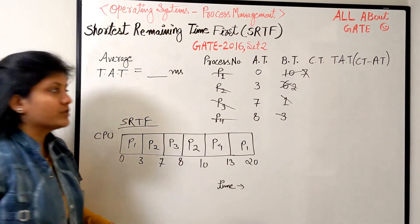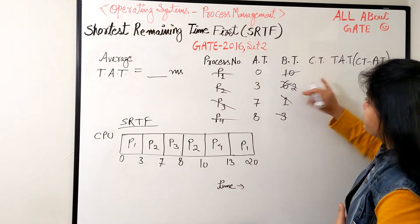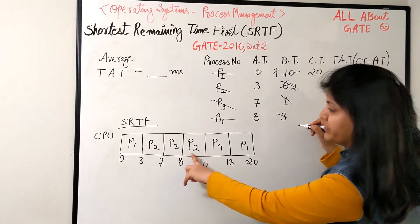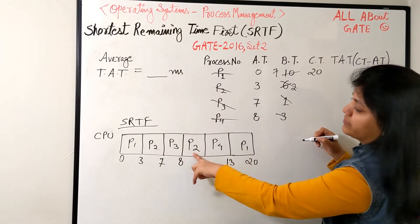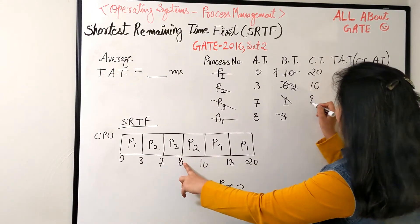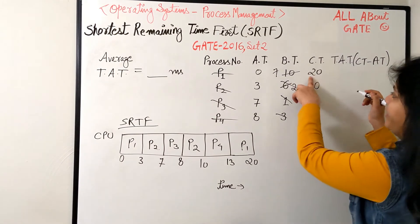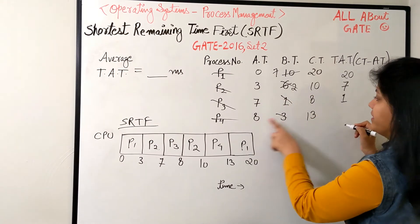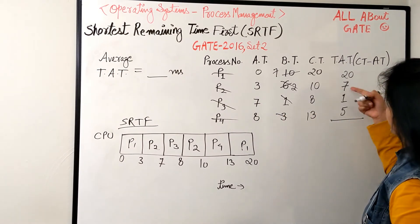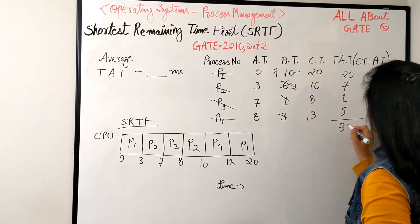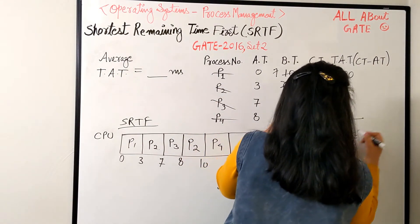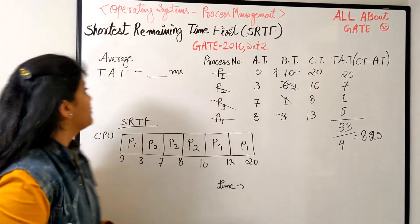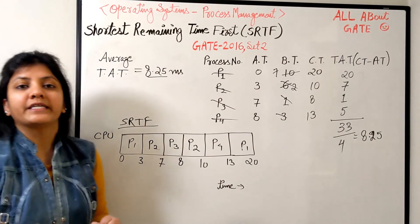Finding average turnaround time using completion times: P1 finishes at 20, P2 at 10, P3 at 8, P4 at 13. Turnaround: P1: 20 minus 0 = 20. P2: 10 minus 3 = 7. P3: 8 minus 7 = 1. P4: 13 minus 8 = 5. Sum: 20+7+1+5 = 33. Divided by 4 processes: 33/4 = 8.25 milliseconds. The average turnaround time is 8.25 milliseconds.